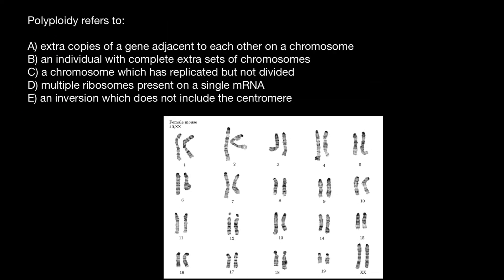Take a look at this picture. This is the karyotype of the mouse. We can find here all the chromosomes present in the mouse genome. This is the karyotype of a female, because we see here two X chromosomes. The genome of the mouse has, as you see, 19 pairs of autosomal chromosomes and two sex chromosomes.